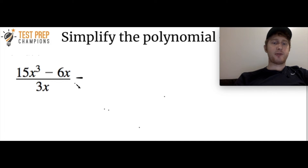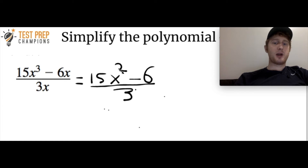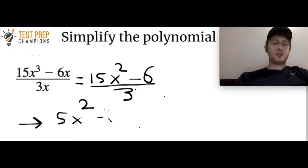If we divide 15x cubed by x, that x cubed becomes x squared. If we divide 6x by x, that just leaves us with 6. And if we take 3x and divide by x, it leaves us with 3. So we can rewrite the problem as 15x squared minus 6 all over 3. Then, similar to the last question, we look at the smallest number, which is 3, and divide each number by 3. 15x squared divided by 3 is 5x squared, and 6 divided by 3 is 2. So the answer is 5x squared minus 2.